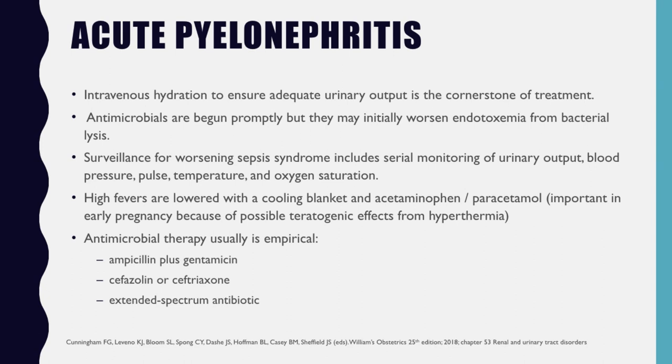To treat acute pyelonephritis, intravenous hydration to ensure adequate urinary output is the cornerstone of treatment. Antimicrobials are begun promptly, but may initially worsen endotoxemia from bacterial lysis. Surveillance for worsening sepsis syndrome includes serial monitoring of urinary output, blood pressure, pulse, temperature, and oxygen saturation. High fevers are lowered with a cooling blanket and acetaminophen or paracetamol — very important because in early pregnancy there is risk of teratogenicity from hyperthermia. Antimicrobial therapy is usually empirical: ampicillin plus gentamicin, cefazolin or ceftriaxone, or extended-spectrum antibiotics.